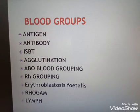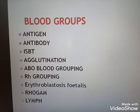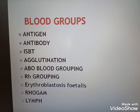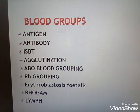Next, we will discuss blood groups. There are four blood groups: A group, B group, AB group, and O group. There is also the positive and negative factor — this is the antigen.